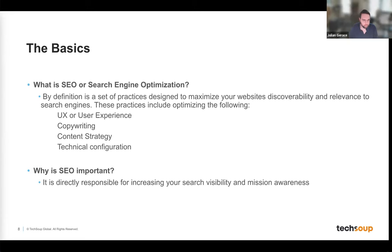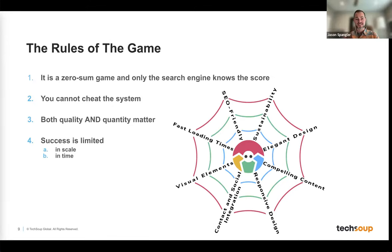SEO is a zero-sum game, and only the search engine — really Google — knows the score. This is Google's game and we're simply invited to participate. Modern society's reliance on Google's tools has led to an all-out competition in SEO — where your organization is vying against others to establish and maintain digital relevance to ensure you get the visibility you deserve.